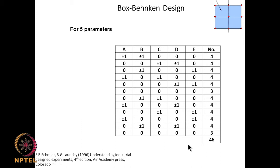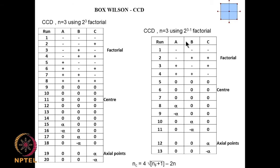Now let us look at CCD, which is also called the Box-Wilson design. In CCD you do the factorial portion, then center points, then the star (alpha) points. For a full 2^3 factorial, you have 8 experiments; then 6 center point experiments; then star points — A at ±α, B at ±α, C at ±α — giving 20 experiments total.